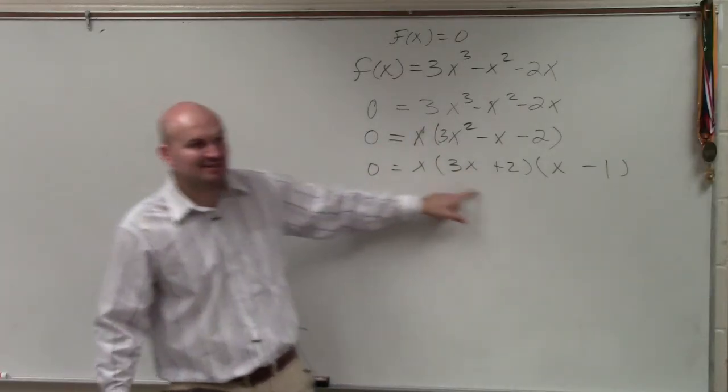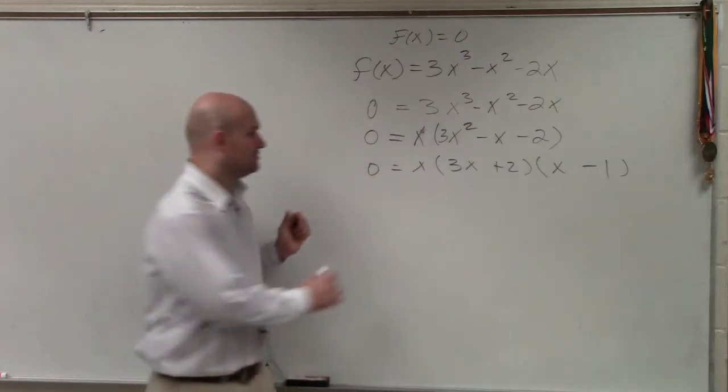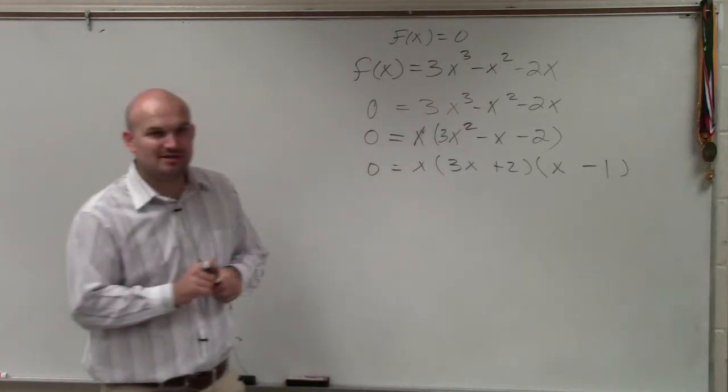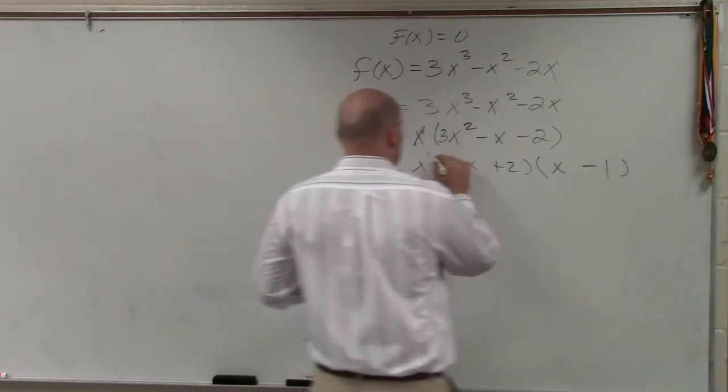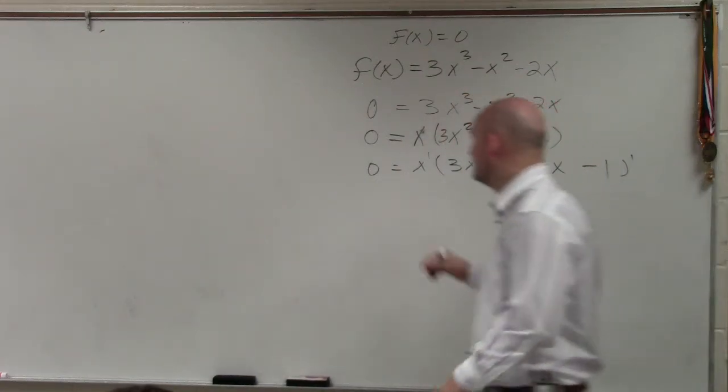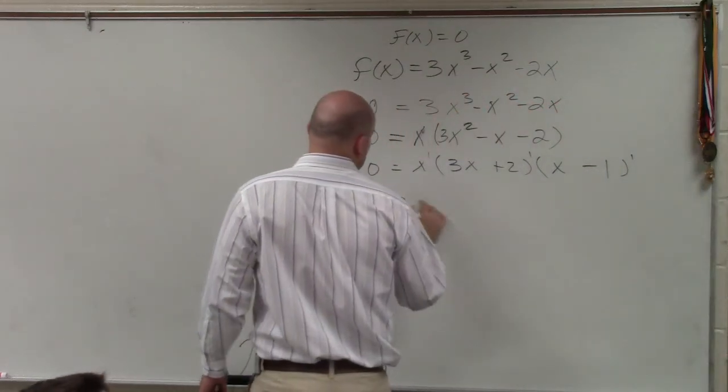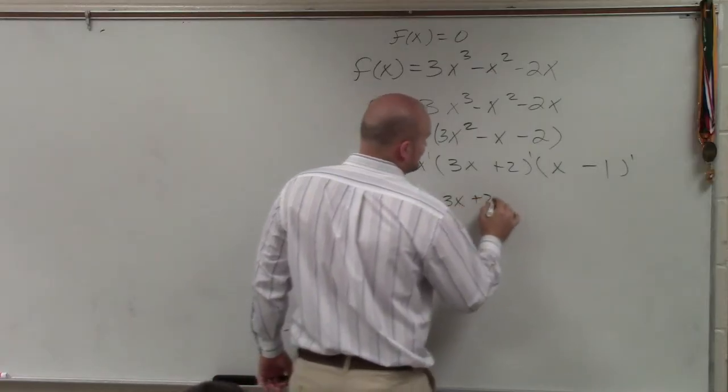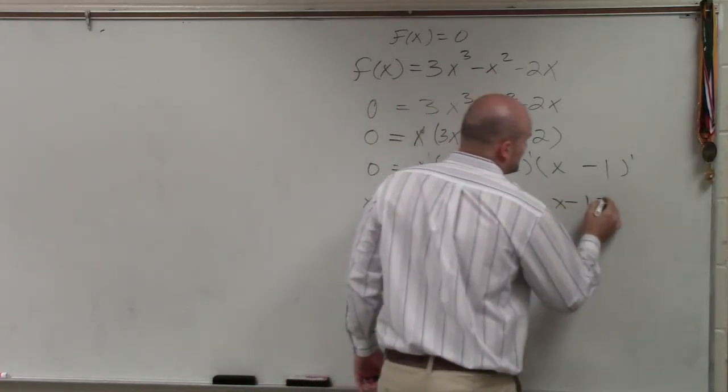Now I have a list of products equal to 0. What's the multiplicity of each zero? 1. All your zeros are 1. So therefore, I have x equals 0, 3x plus 2 equals 0, and x minus 1 equals 0.